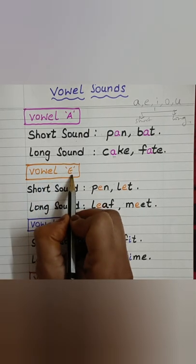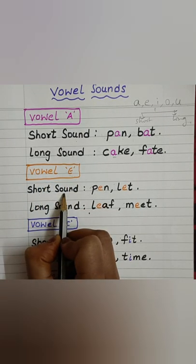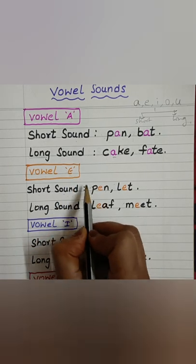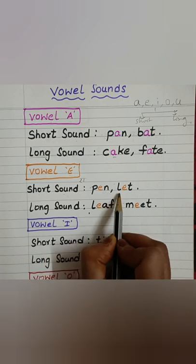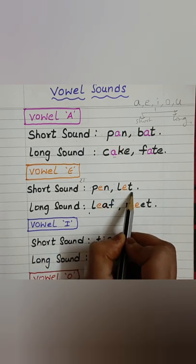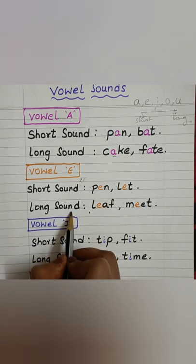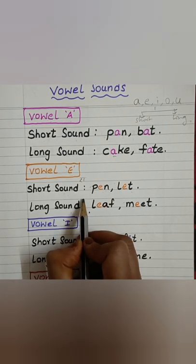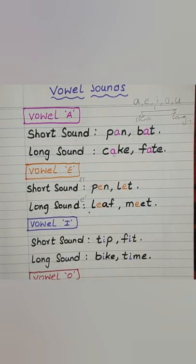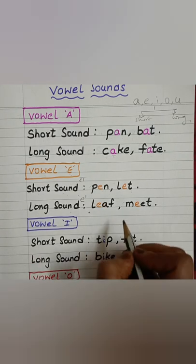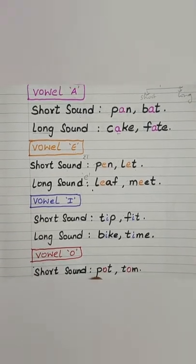Now vowel E. The short sound of vowel E is 'e' — P, E, N: Pen. L, E, T: Let. The long sound of vowel E is 'E' only — we pronounce it as 'E' only. L, E, F: Leaf. M, E, T: Meet.